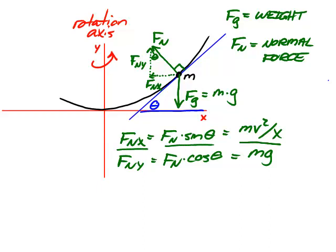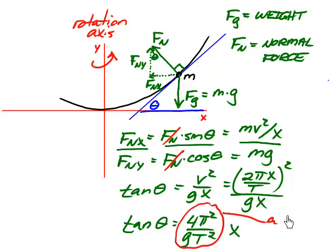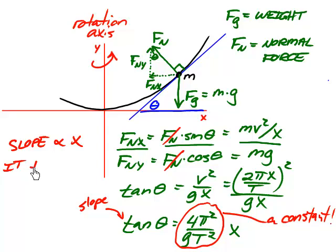Dividing the x equation by the y equation allows us to get rid of F sub n, yielding tangent theta equals v squared over gx. But the speed v is equal to the circumference over t, the rotation period. That's just distance divided by time for circular motion. Substituting that in for v tells us that tangent theta equals 4 pi squared over gt squared times x. 4 pi squared over gt squared is a constant, and tangent theta is the slope of the surface. So what this equation is saying is that the slope is proportional to the distance from the axis. And that was the defining property of a parabola. We have proven that the water surface takes the shape of a parabola.